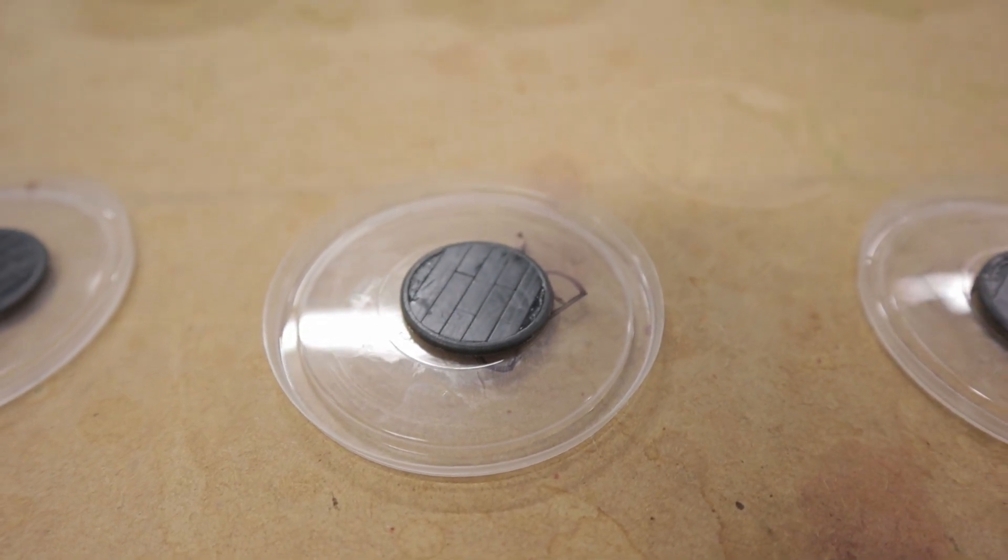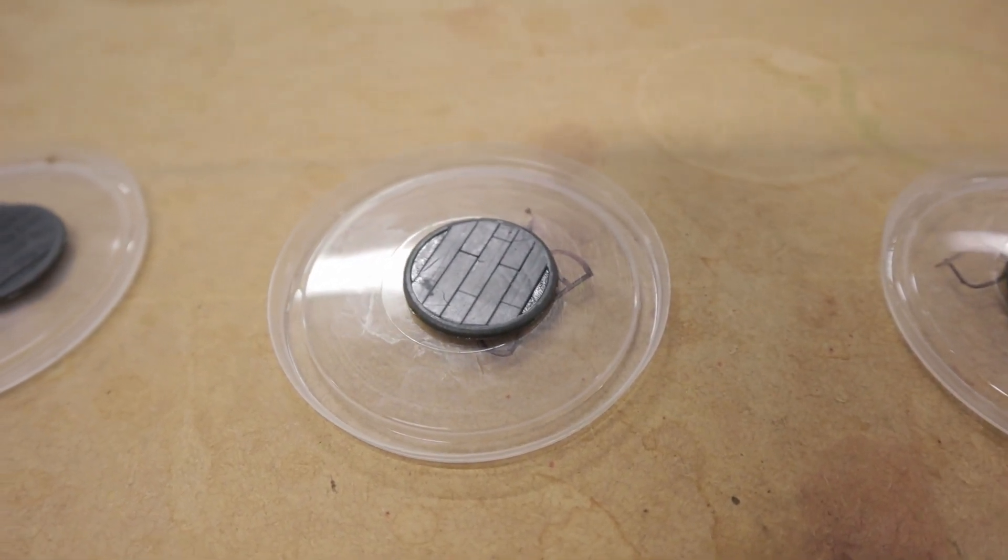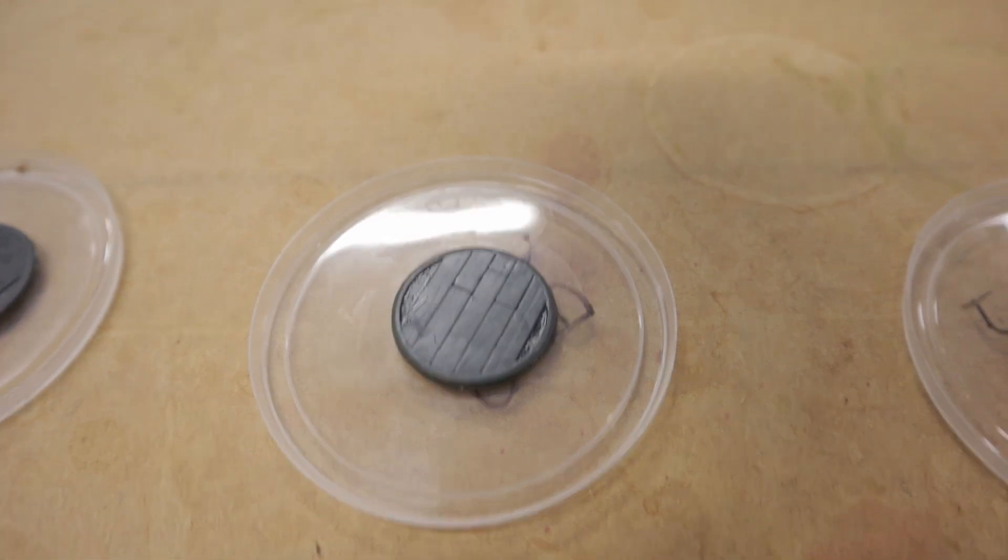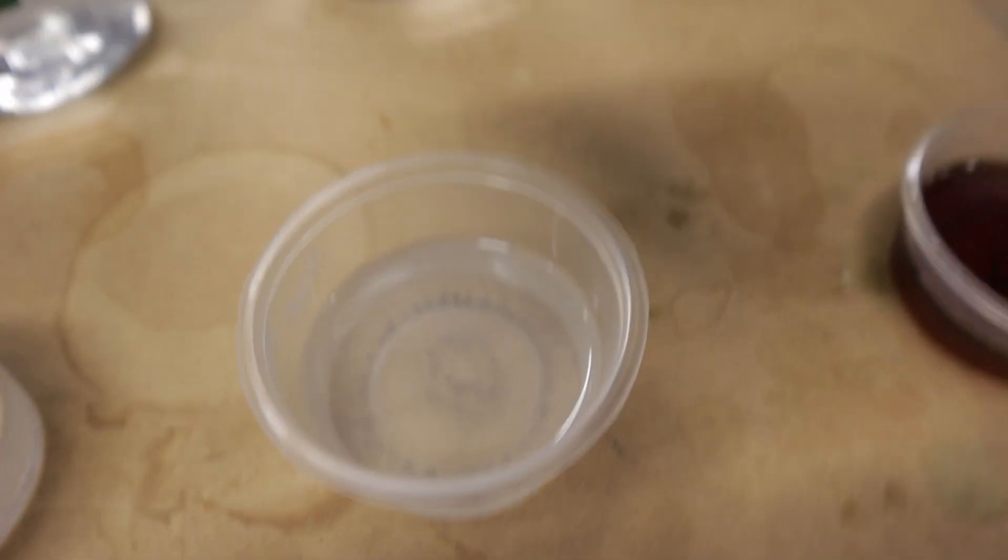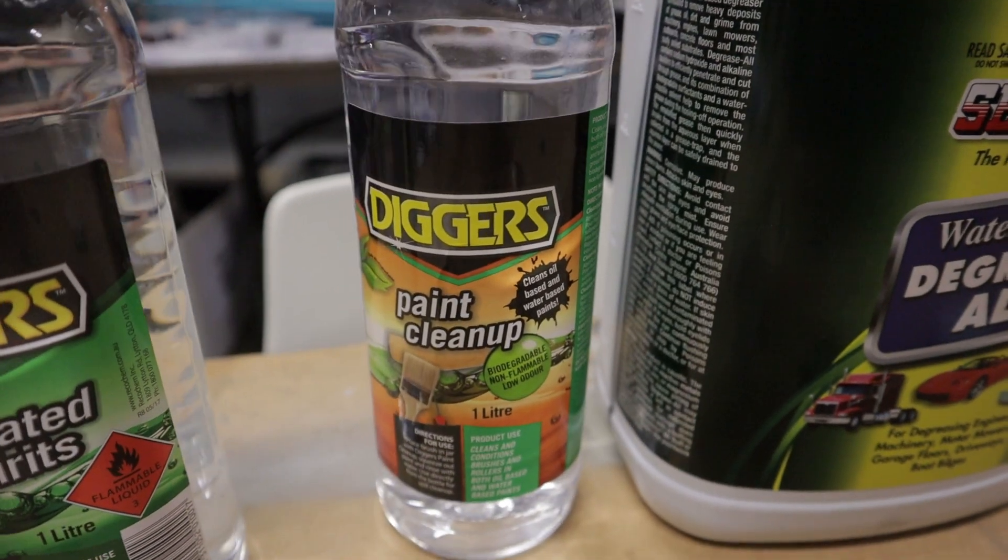Now let's look at the prints from the paint cleaner. I can see some unclean spots, but overall I think it's done a pretty decent job. As you can see in the liquid, it has removed some unwanted resin.